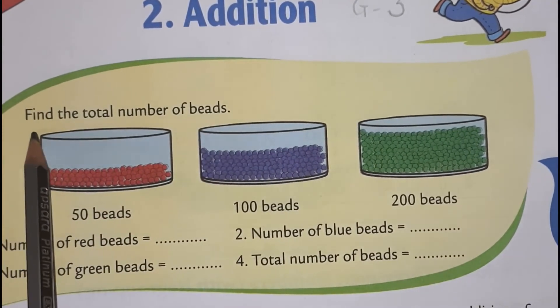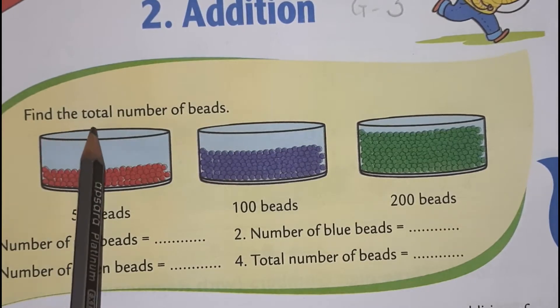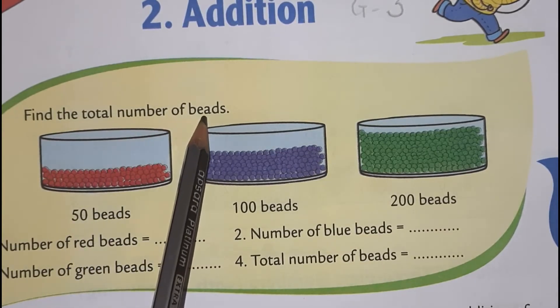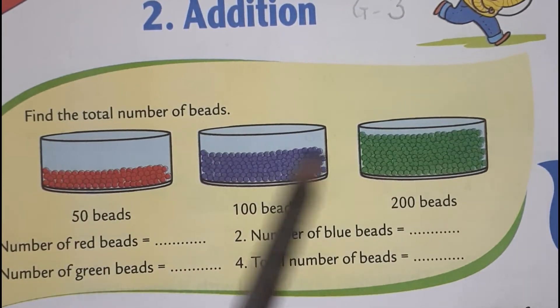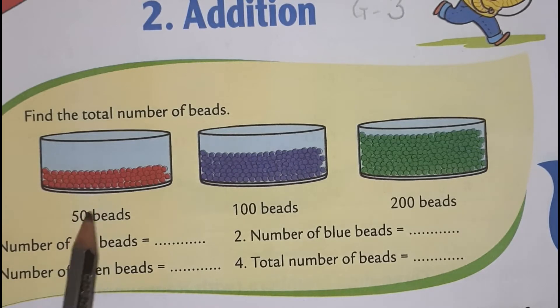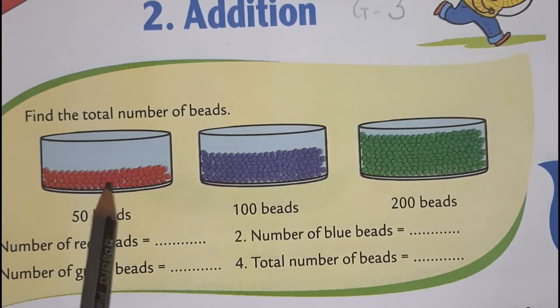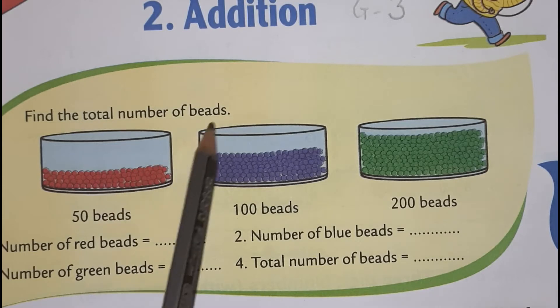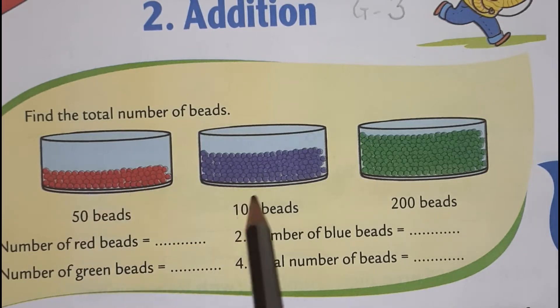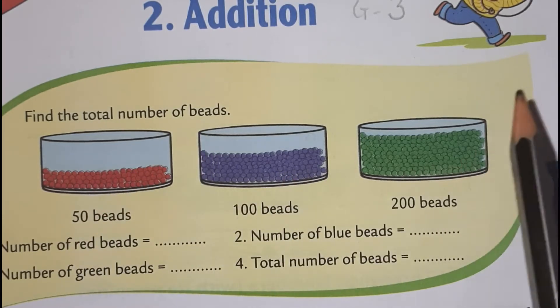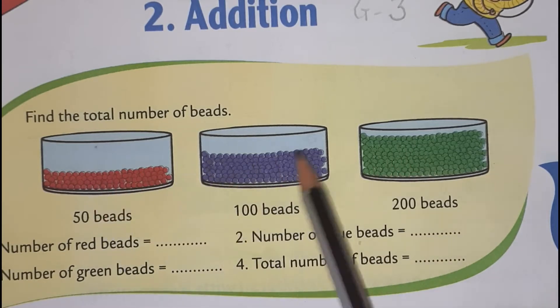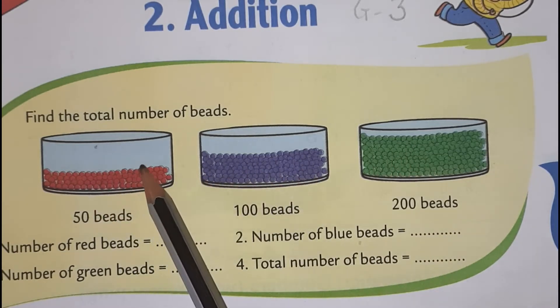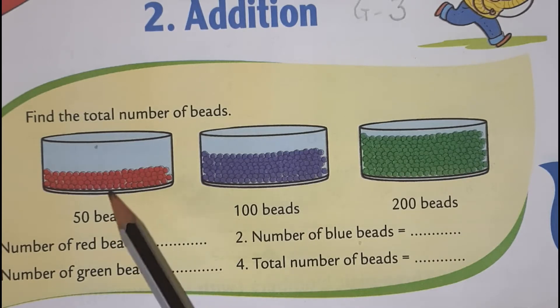Find the total number of beads. These are the three, you can say, drums or containers. In this, you can see there are red beads, purple beads, green beads. So, three different color beads are in these boxes.